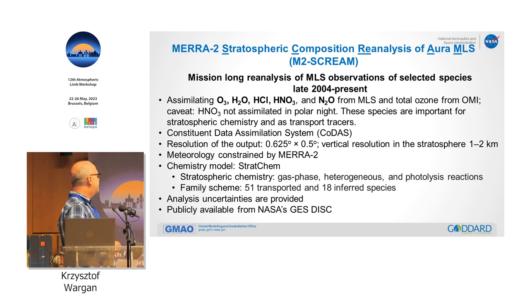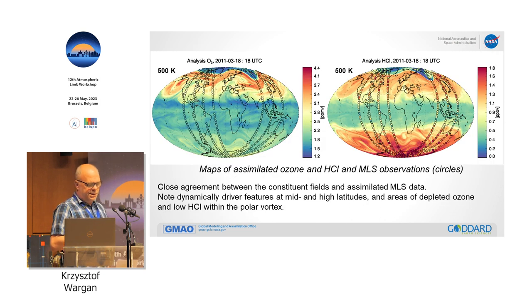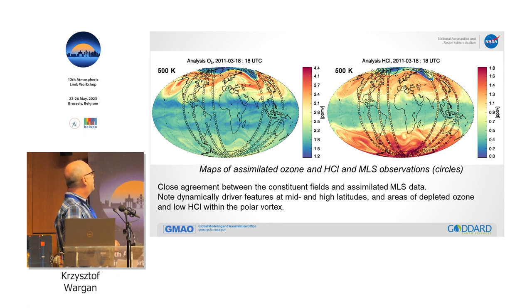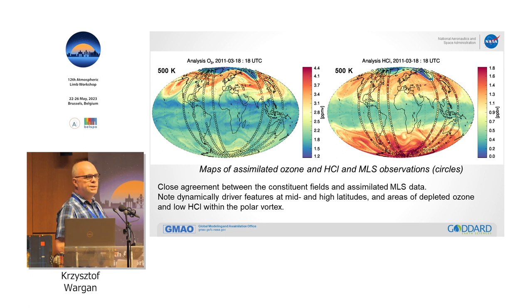STRATCHEM is a family scheme. It doesn't include a troposphere, so don't look at tropospheric composition in SCREAM. The data are publicly available. Here is an example of two fields at the 500K isentrope — snapshots of ozone and HCl. The SCREAM fields are shown with overlaid MLS observations at the same time. For ozone there is very good agreement, as you'd expect — data assimilation propagates all this and builds a picture of field morphology. For HCl there are some discrepancies, as MLS HCl observations are noisier than ozone, but this noise doesn't propagate into the analysis because data assimilation works like a filter.